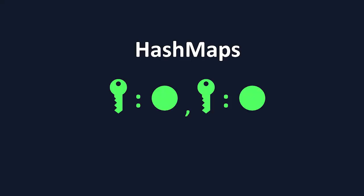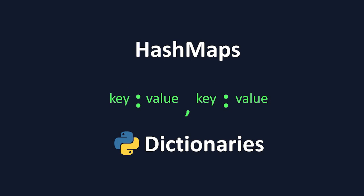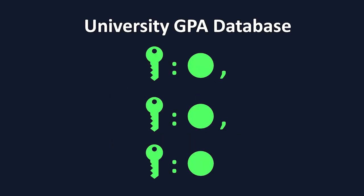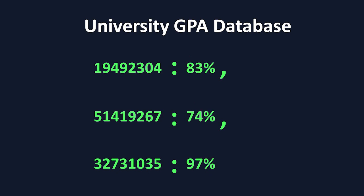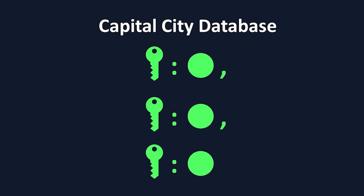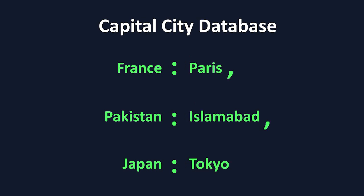A HashMap, referred to as a dictionary by Python, is a data structure that stores information called values and pairs them up with unique identifiers called keys. A simple example to understand this is a university GPA directory. Each student likely has a unique student ID, which is the key, and it has a respective GPA along with it, which is the value. Or think of a list of capital cities — if we make the keys countries, we can just look up the country to find the capital city, which is the value.